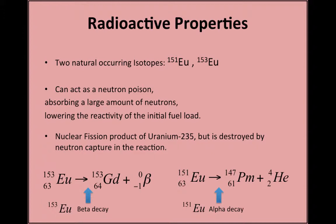Europium has two naturally occurring isotopes. Europium-151 generates promethium-147 through alpha decay. On the other hand, Europium-153 generates gadolinium-153 through beta decay.